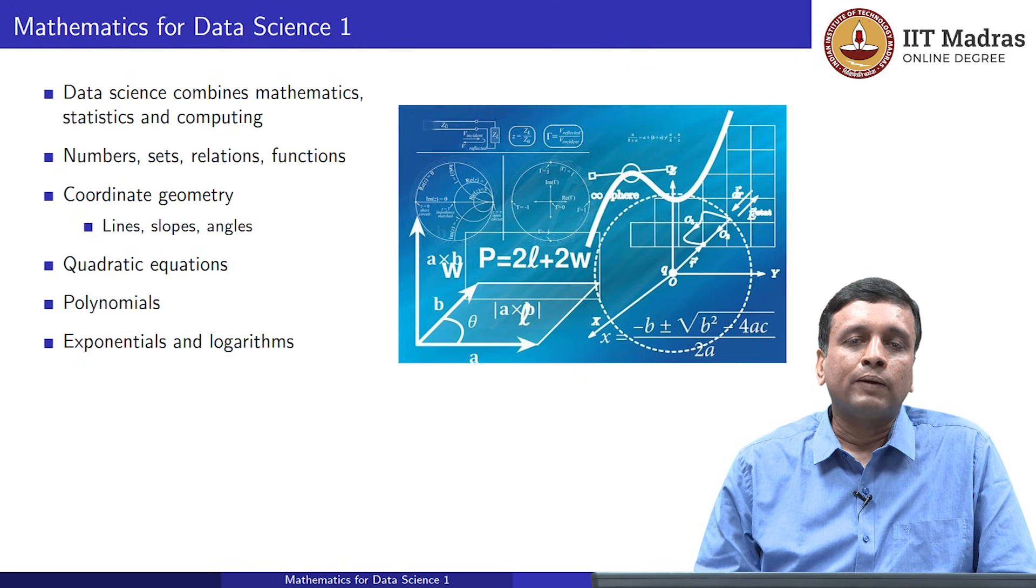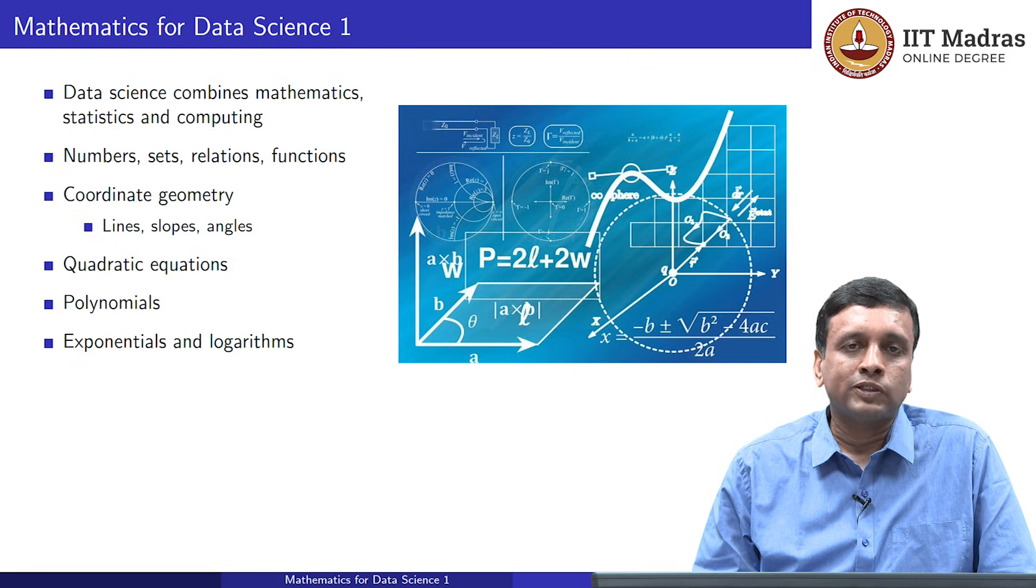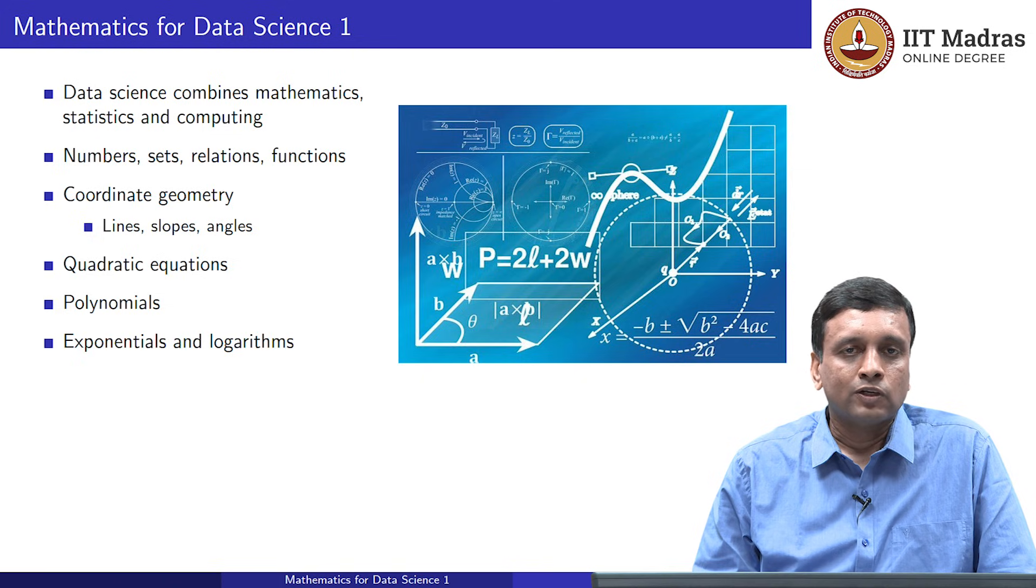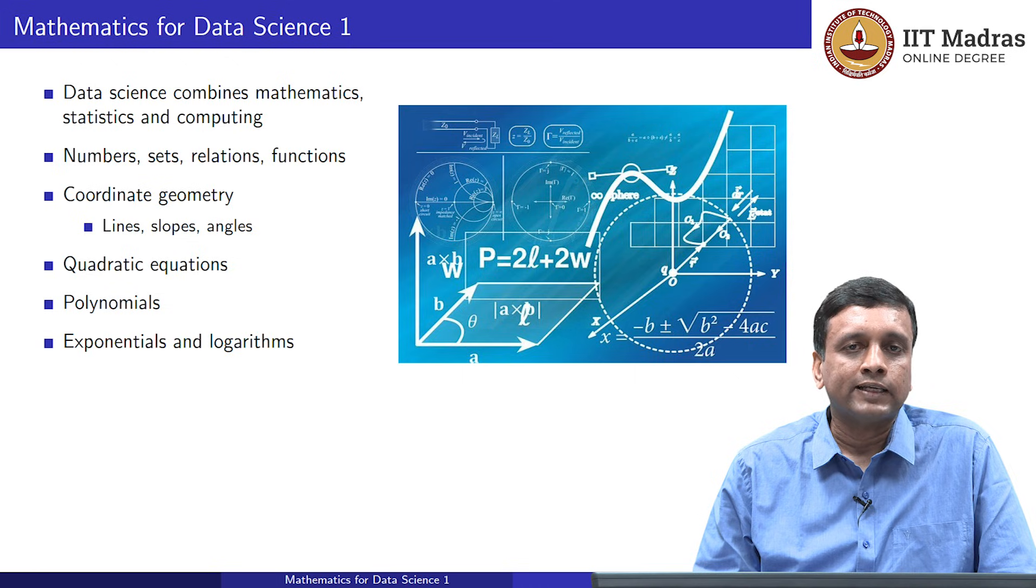Moving on from polynomials, we have functions which are not polynomials. Those that grow very fast, these are exponentials, and those that grow very slowly, these are logarithms. To summarize, we will be looking at a large variety of functions starting from lines and going through polynomials to exponentials and logarithms.